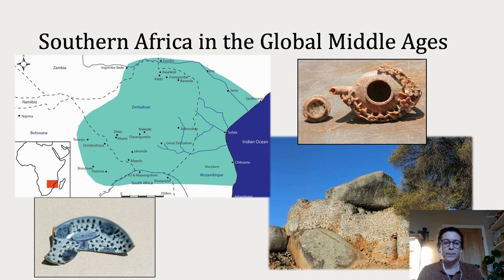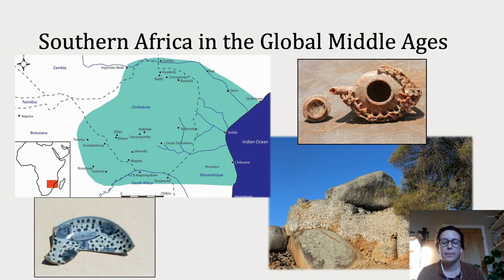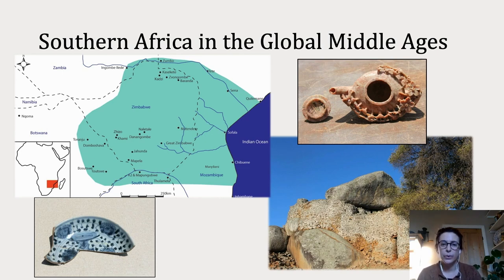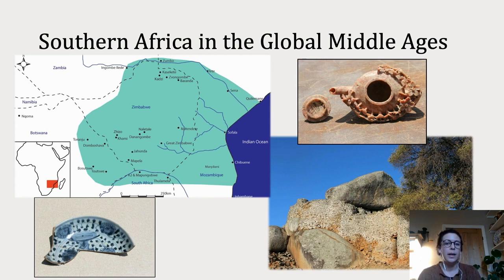From the late first millennium and early second millennium AD, we also see the development of complex urban and political formations in the region. Perhaps the most well known is Great Zimbabwe, famous for its elaborate dry stone walls, and also for the exotic objects found at the site, including a jade teapot from China, porcelain, and other items.